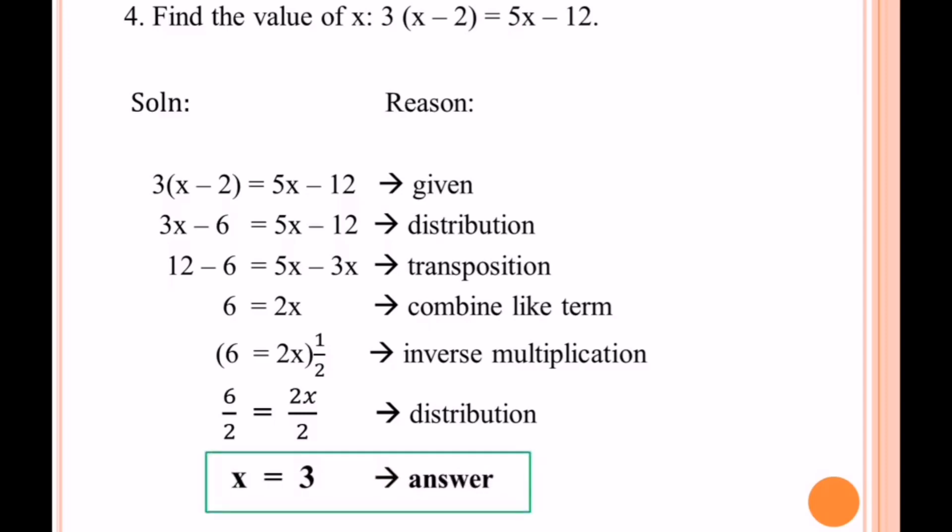If you want to check whether our answer is right, let us use the value of x, which is 3, and substitute it to the original equation. So we have 3 times (3 minus 2) equals 5 times 3 minus 12. We know 3 minus 2 is 1, 1 times 3 is 3.